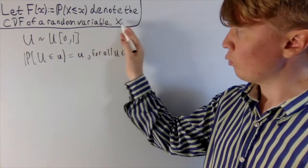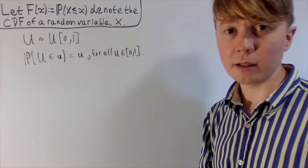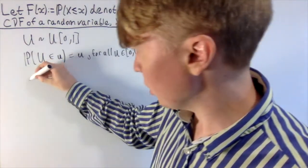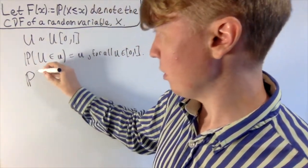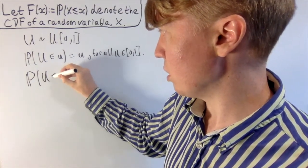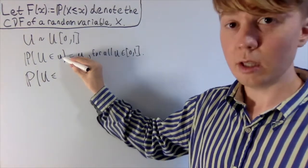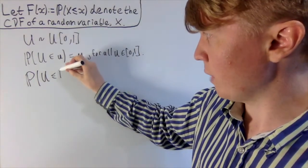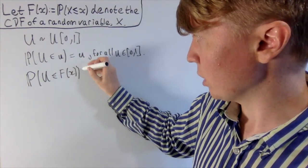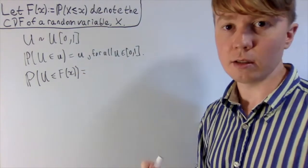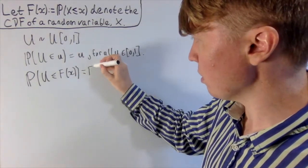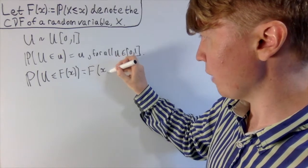To show that our random variable X is some sort of transformation of this uniform distribution, there's just one trick that we apply. The probability that U is less than or equal to u — if I substitute in F(x) in place of u, this is absolutely fine because F(x) is a probability, it's always between 0 and 1, so it's in the right range of values — this is equal to F(x).